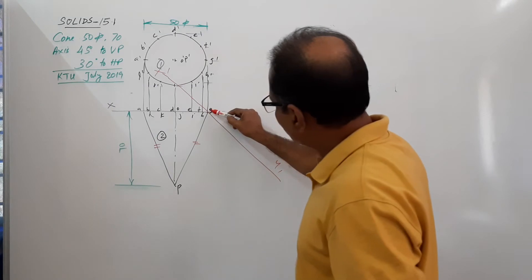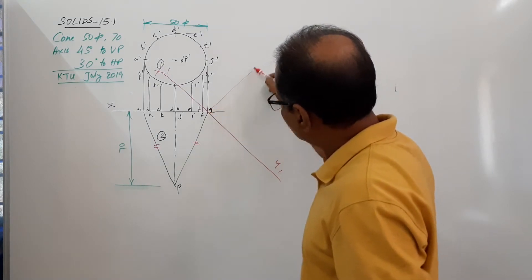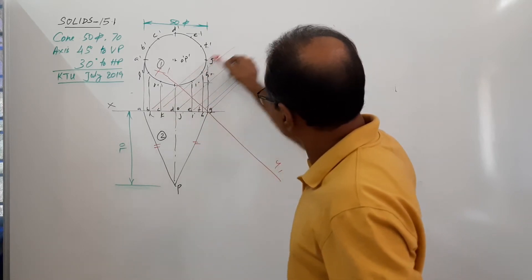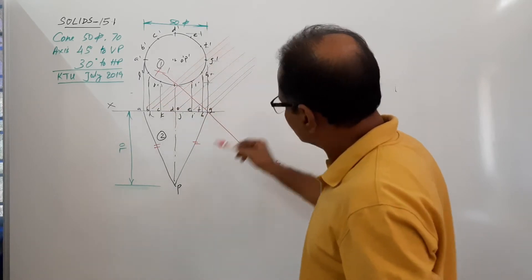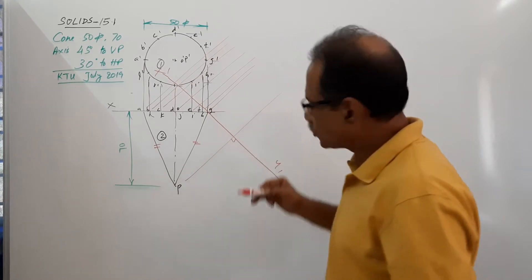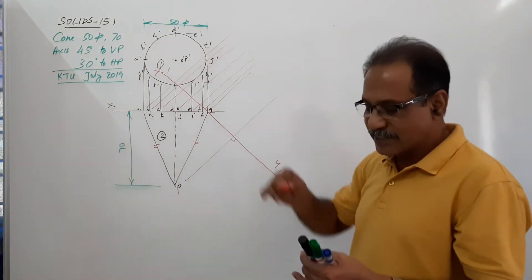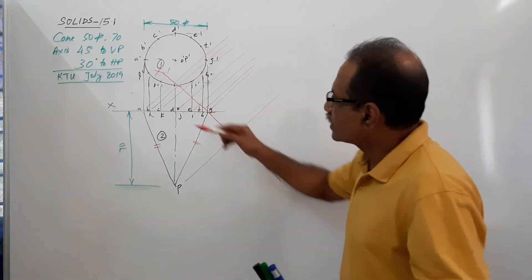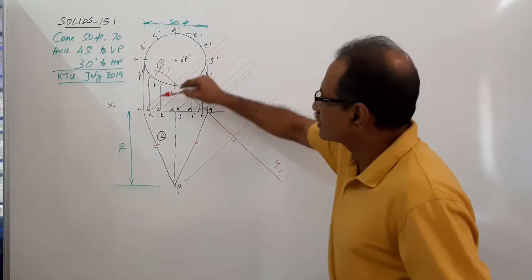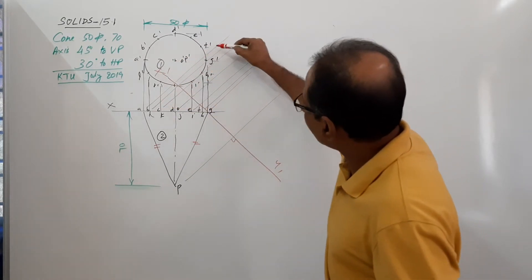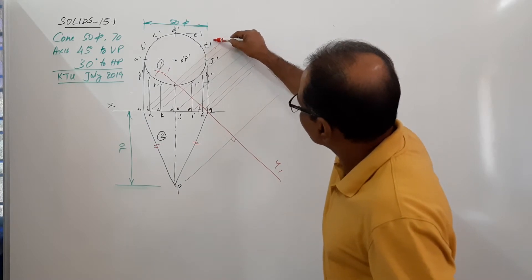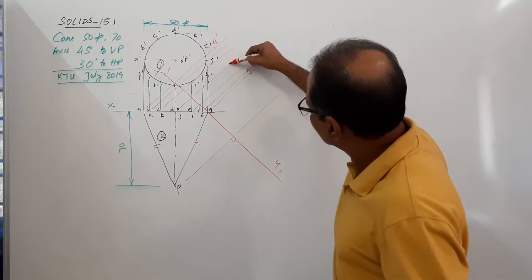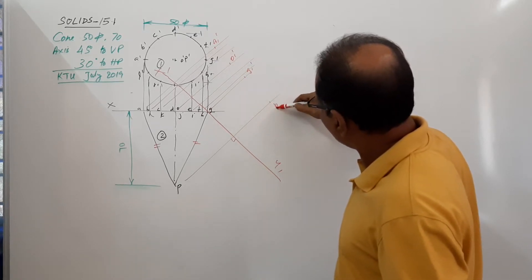You have to draw projectors perpendicular to x1y1 — very light projectors, at 90 degrees. Take the distance from the previous elevation and mark off a-dash, o-dash, b-dash, and g-dash. Same distance above x1y1 on the projector through A, you will get a1-dash, g1-dash, o1-dash, p1-dash.